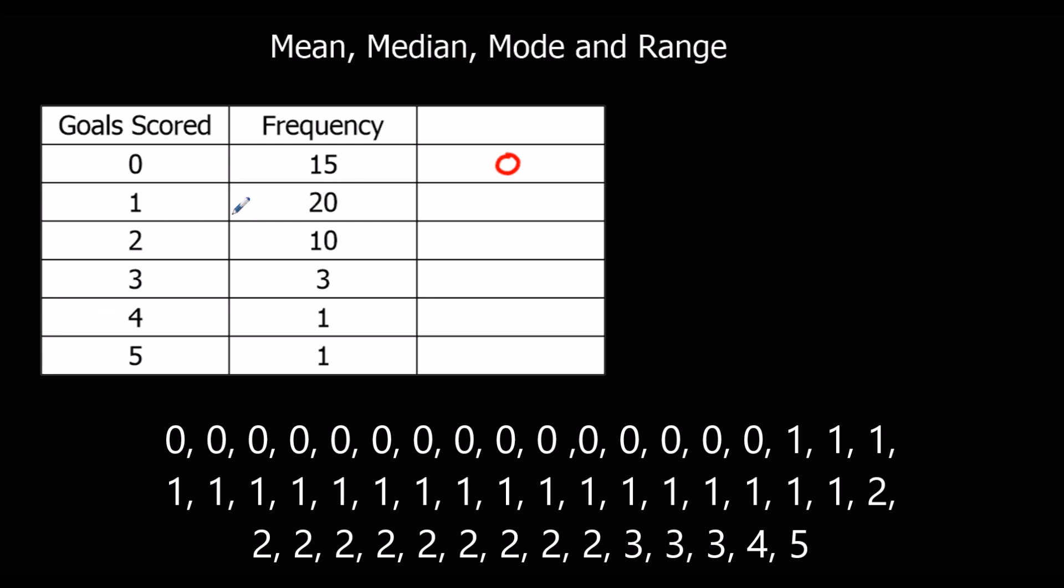We've got 1, 20 times. So 1, 1, 1, 1, the whole list of ones. 20 ones, 1 times 20, adds up to 20. We've got 2, 10 times. So the 10 twos add up to 2 times 10, which is 20.